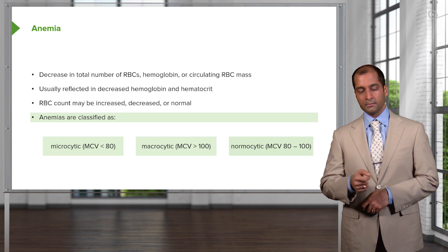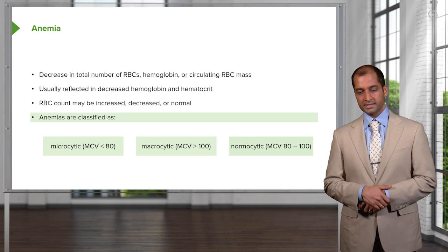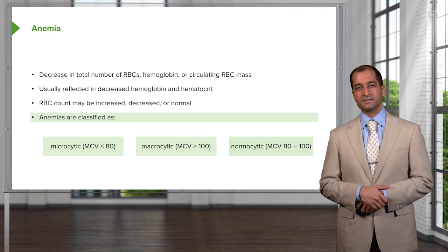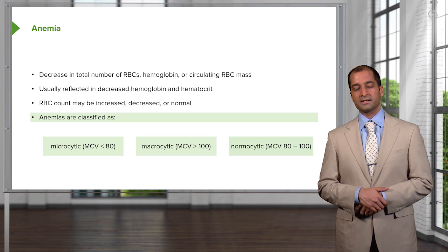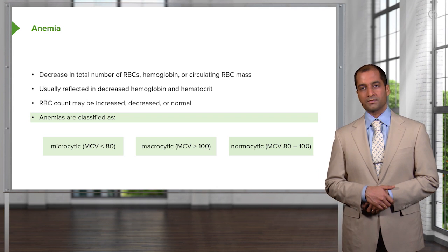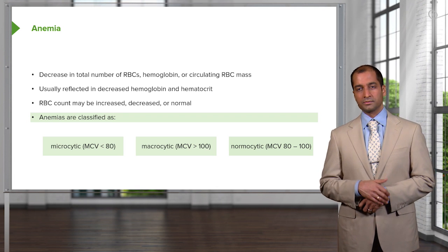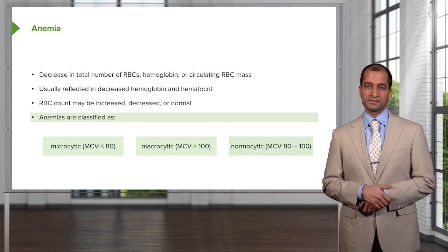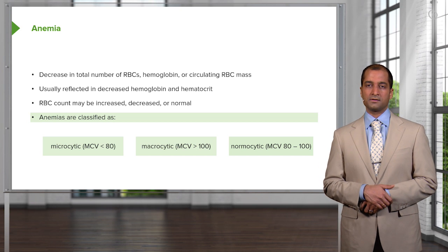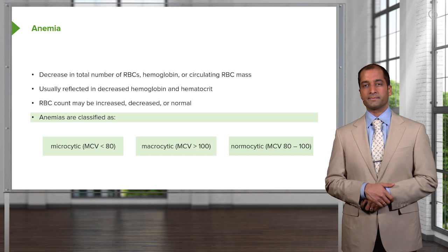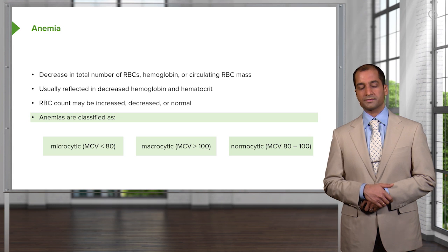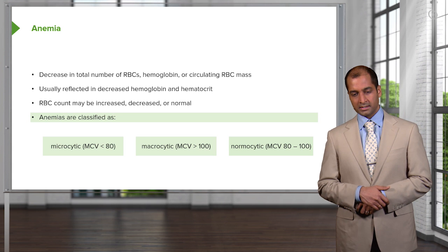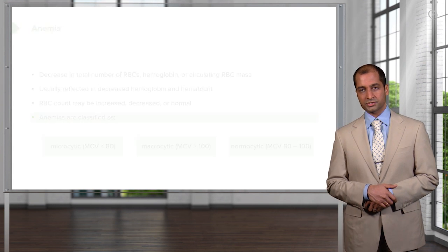As we move through some of these specific anemias, I'm going to add in more parameters, including red blood cell distribution width, mean corpuscular hemoglobin concentration, and RBC count and such.